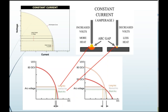Voltage regulation is taken care of by the welding machine automatically. A constant current curve is shown here. We can see that as arc length increases, the voltage increases to a higher value, but there is only a slight change in current. Similarly, when the arc length decreases, voltage decreases, but the change in current is still minor due to this characteristic.